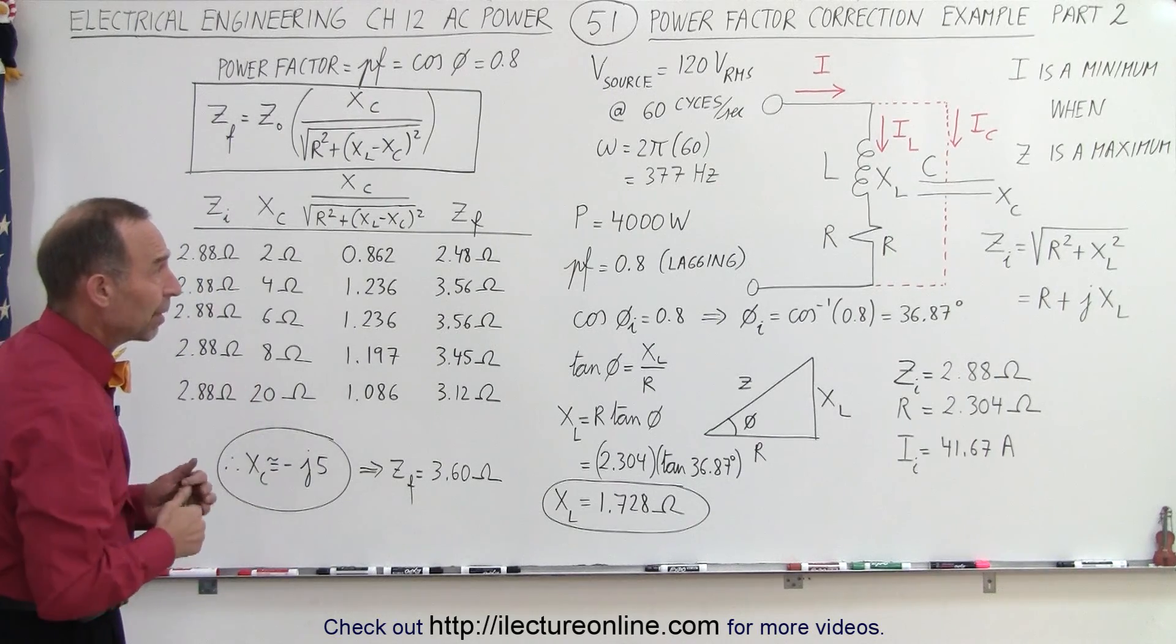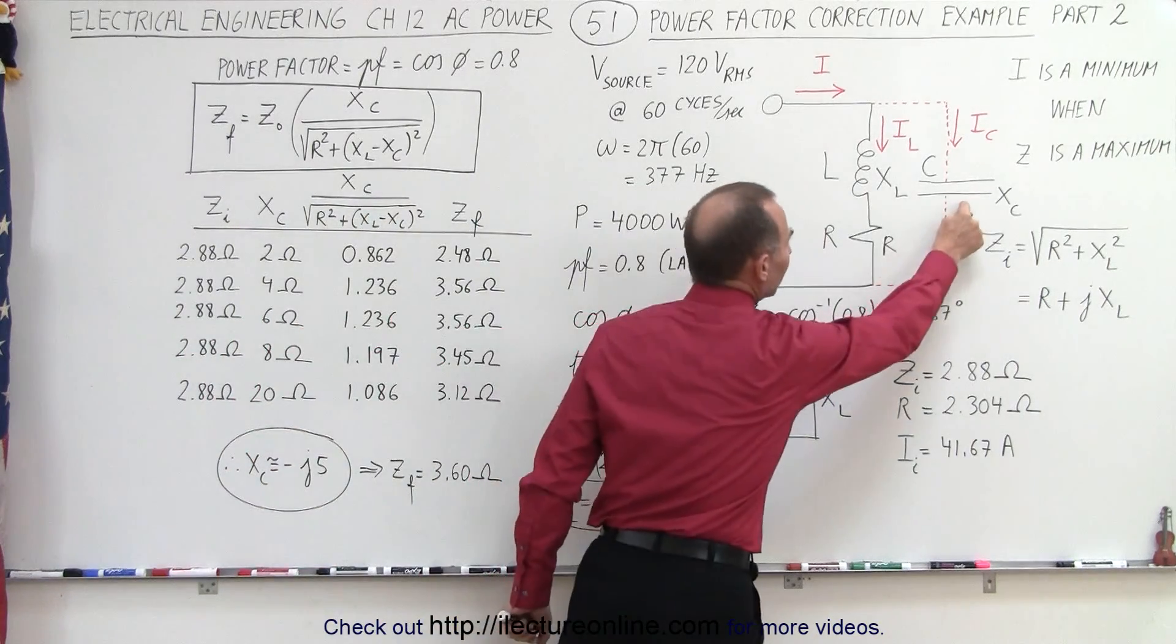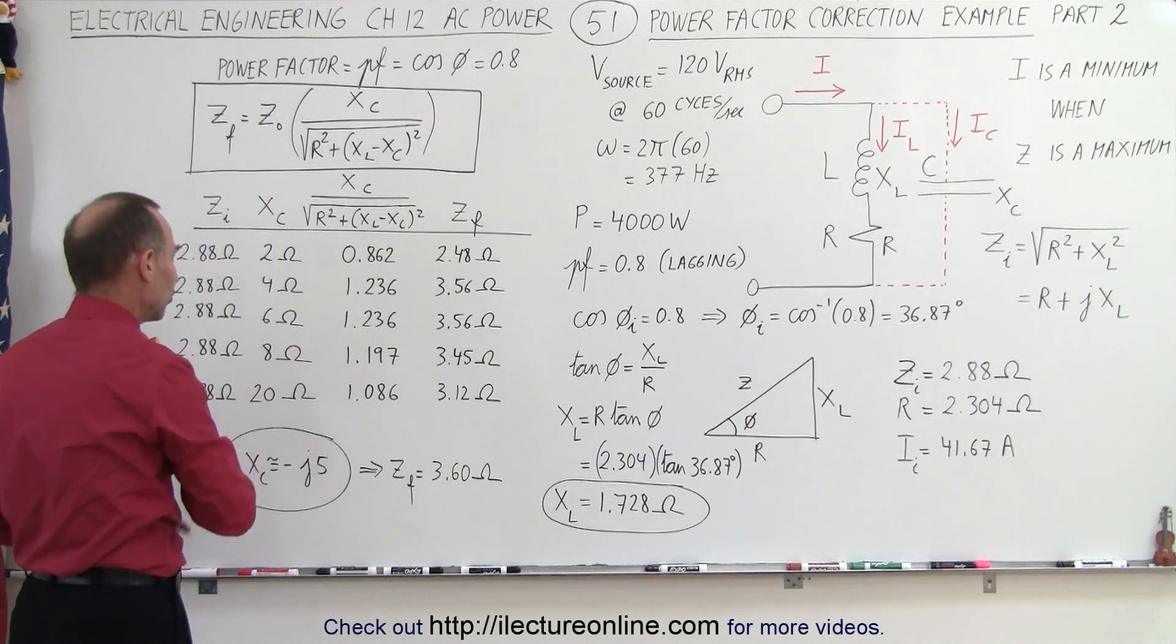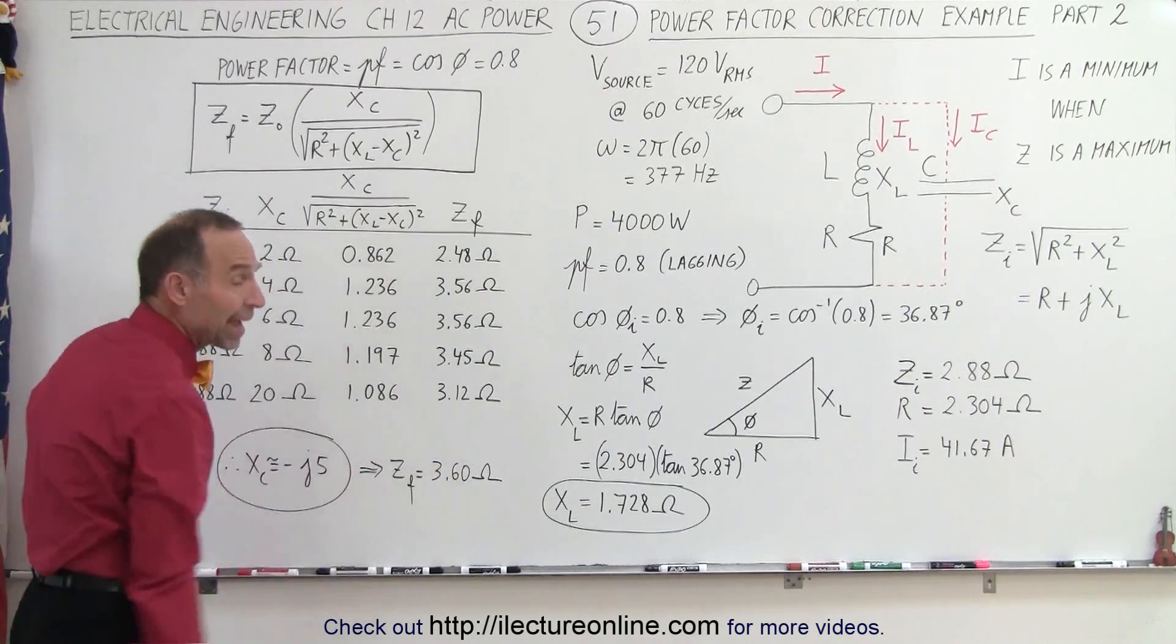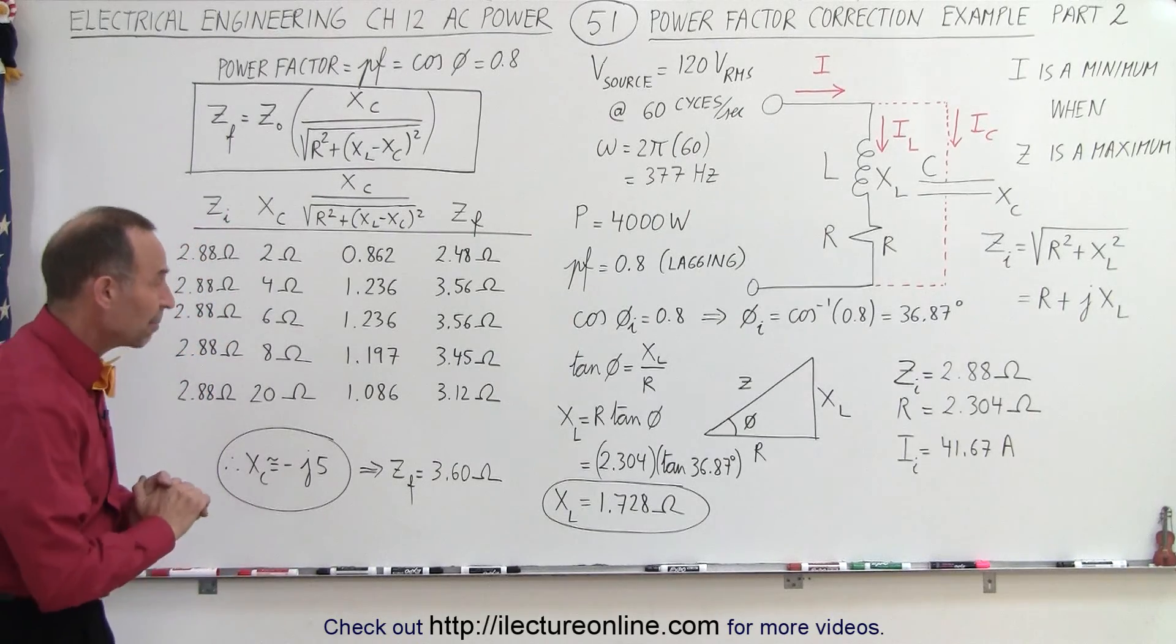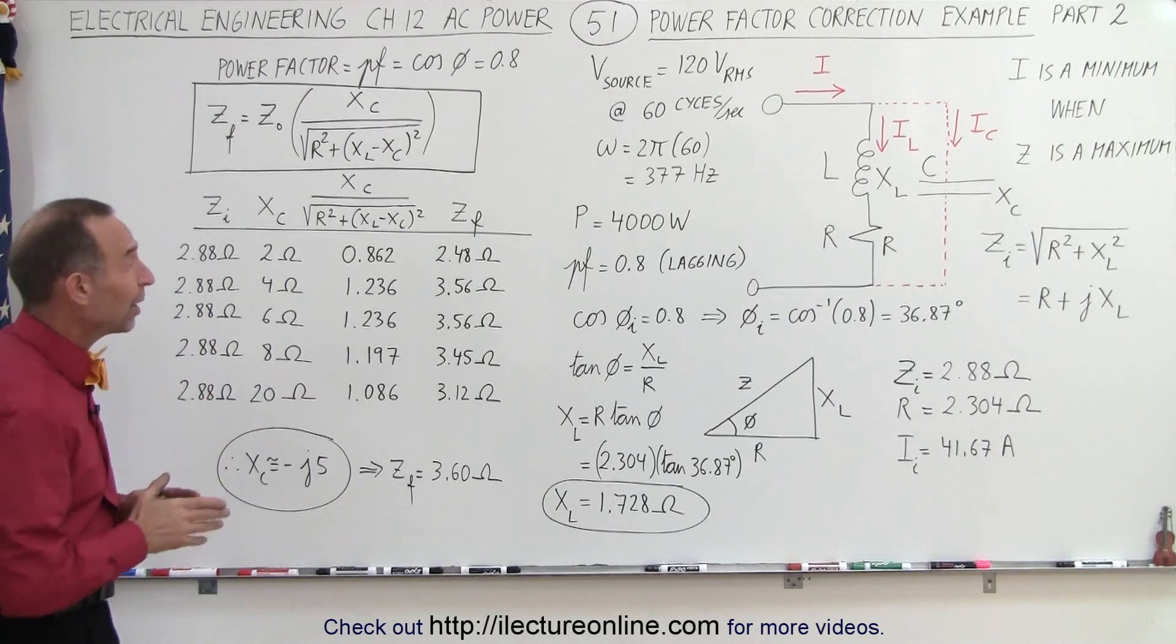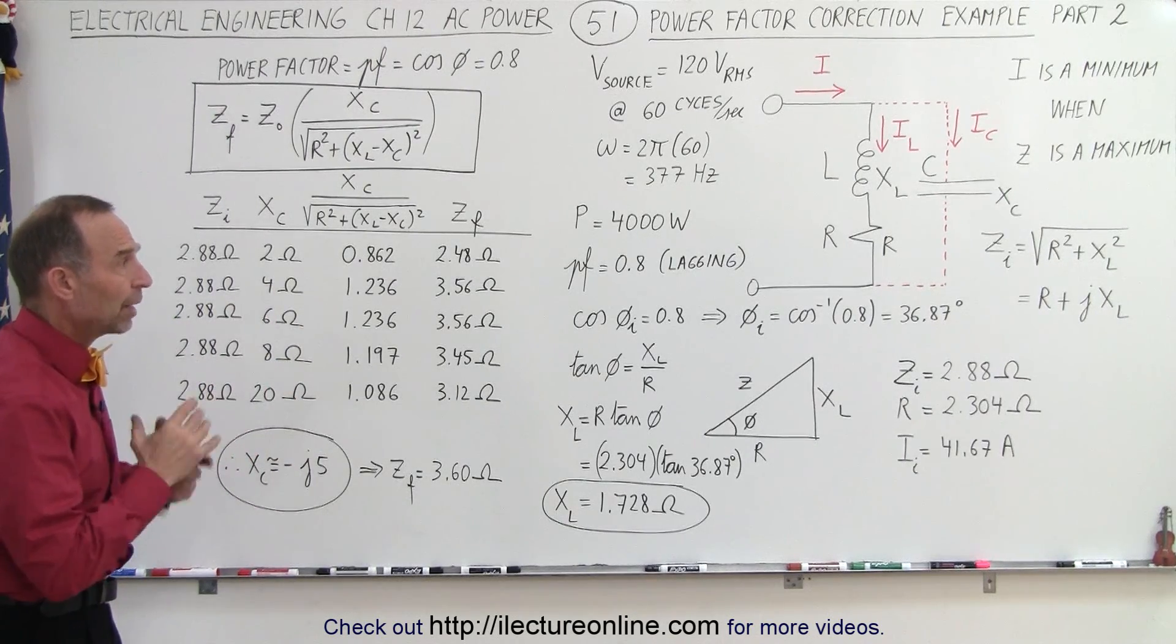For power factor correction, we need to pick the correct capacitor so that we maximize impedance. Here by using a series of values we noticed that if the capacitive reactance is around 5 ohms, we have the maximum impedance and therefore the largest power factor, probably very close to 1, and therefore we have the least amount of current required to power our circuit.